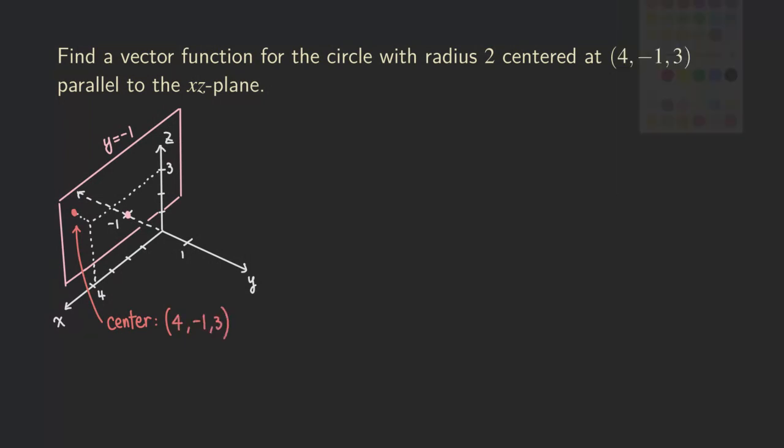So right now, all we need to do is to come up with a Cartesian equation in both x and z so that we can come up with the curve, the circle. And then we also need to specify the y value because y is a constant in this case. Because no matter which point that you pick on the circle, that point is going to have a y value of negative 1, because it lies in this plane.